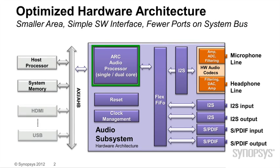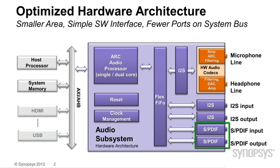There are digital I2S inputs and outputs. We also have SPDIF that can be used for off-chip connections as well as high-bandwidth on-chip connections. These can be programmed in high-bandwidth mode and directly hooked up to Synopsys HDMI IP. Finally, we have analog hardware codecs. These ADC and DAC converters have a dynamic range of 96 dB.